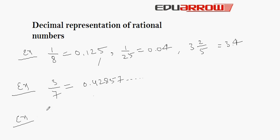If we divide 4 by 9, the result is 0.4444444444... In such cases, the process of division will never end, and in the decimal part, either a single digit or a set of digits repeats again and again. Here, 4 is the period that is repeating again and again. So here 4 is the period.